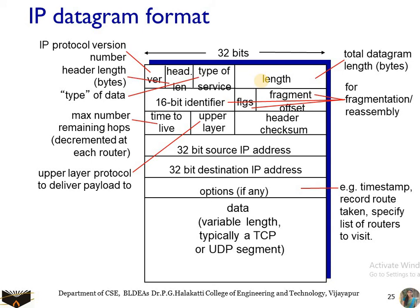Next we have the header checksum field. The header checksum aids a router in detecting bit errors in received datagrams. It is computed by treating each two bytes in the header as a number, summing these numbers using one's complement arithmetic. The one's complement of this sum is the internet checksum, stored in the checksum field. A router computes the header checksum for each received IP datagram; if the computed checksum does not match the one carried in the header, the packet is discarded. We already computed the checksum for UDP, and similarly we have checksum calculations for TCP.